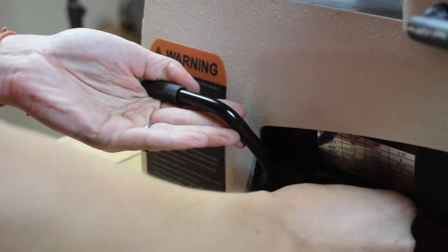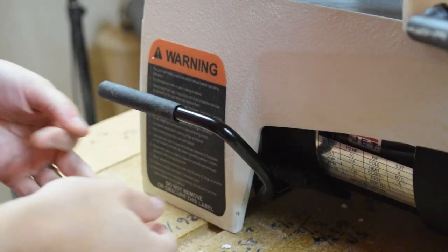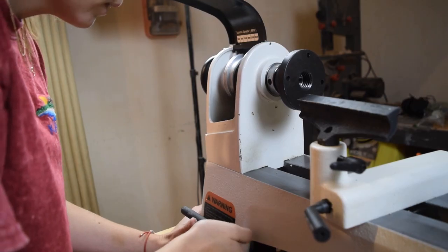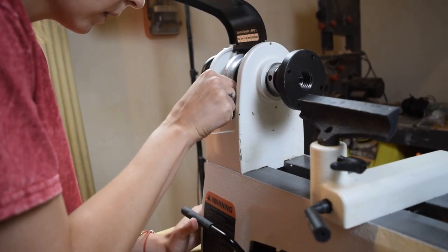To do this, relieve the belt tension by loosening the lever at the bottom left-hand side of the machine. Set the belt in the desired tracks, and then increase the belt tension before tightening the lever again.